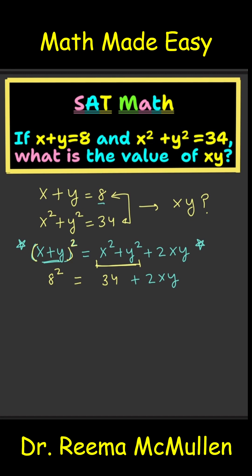Now, 8 squared. What's 8 squared equal to? We know that's equal to 64. Equals what? 34 plus 2xy. What do we do next?